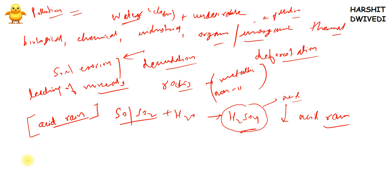There are two types of pollution sources: point source and non-point source. In point source pollution we are well aware of which source the pollution is coming from. For example, if two or three big industries have laid down a drainage pipe network emitting effluent, those drainage outlets become the point source of pollution — we know the exact location.